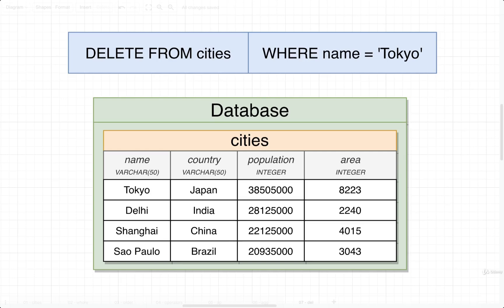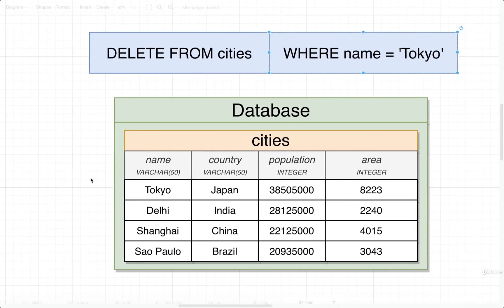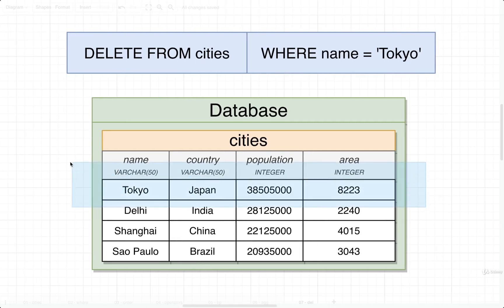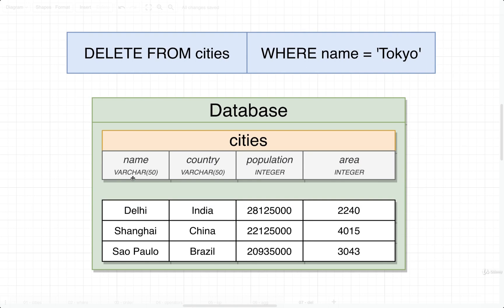Let's take a look at deleting. To delete a row out of a table, the syntax is very simple: DELETE FROM, then the name of the table we want to delete from, followed by a WHERE clause that specifies exactly which record or records we want to delete. So if we put WHERE name equals Tokyo, we look at all the rows inside cities, find any row with the name Tokyo — in this case the first row — and delete it. That's how DELETE works.